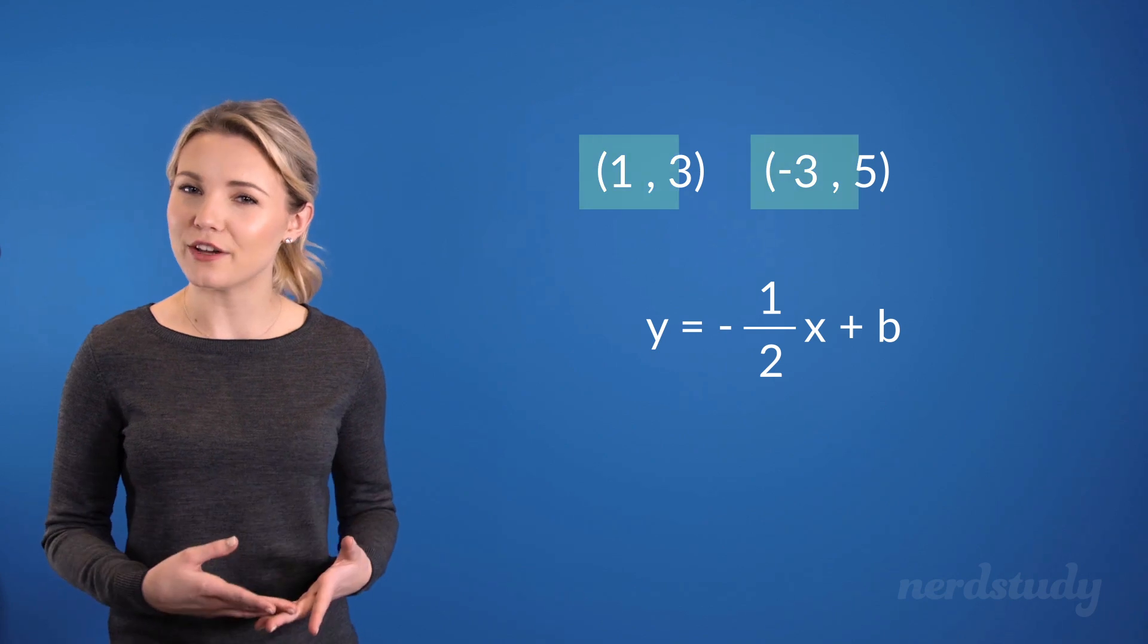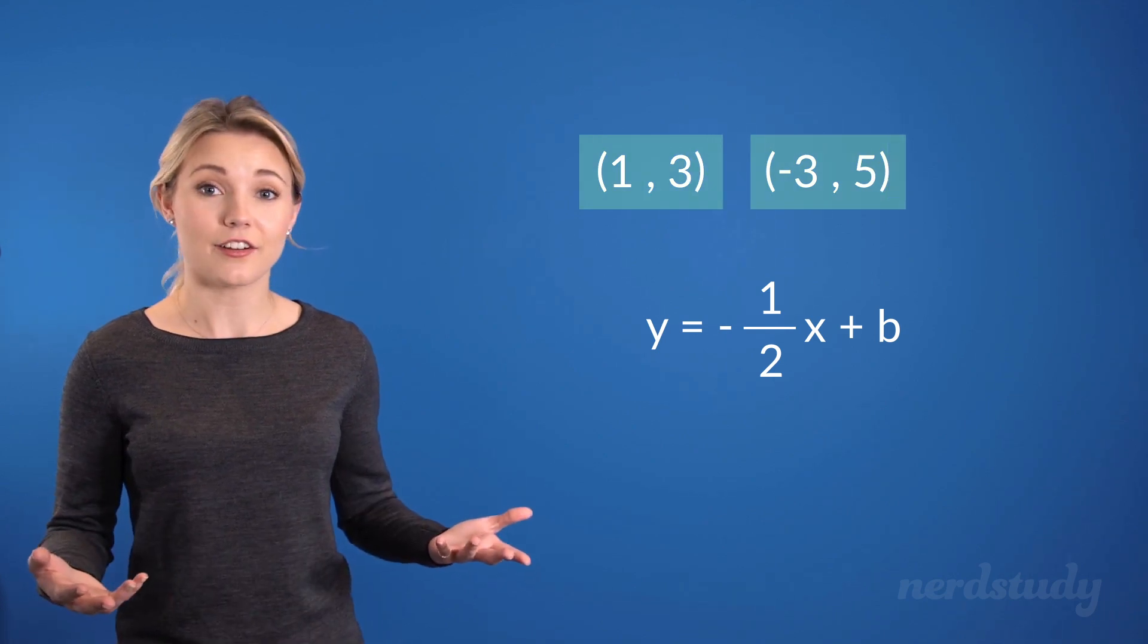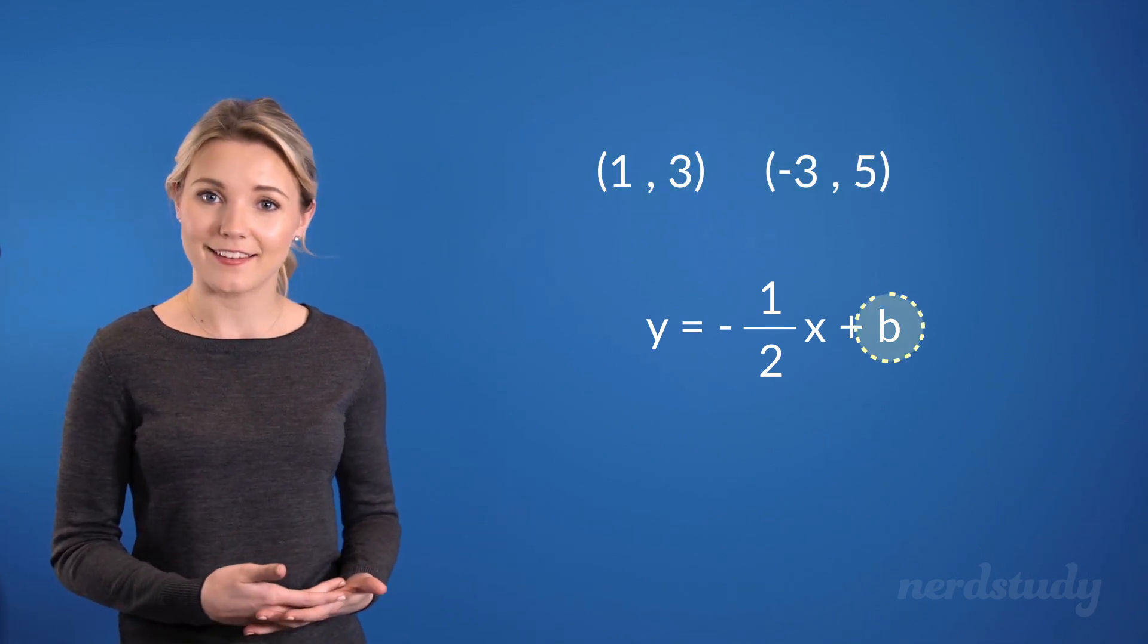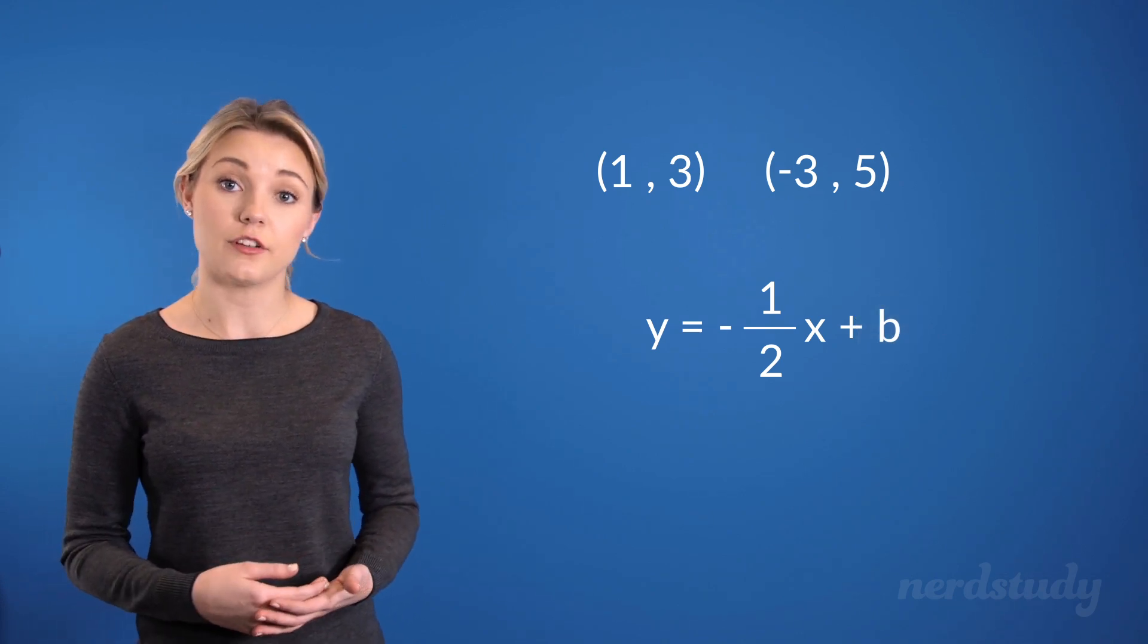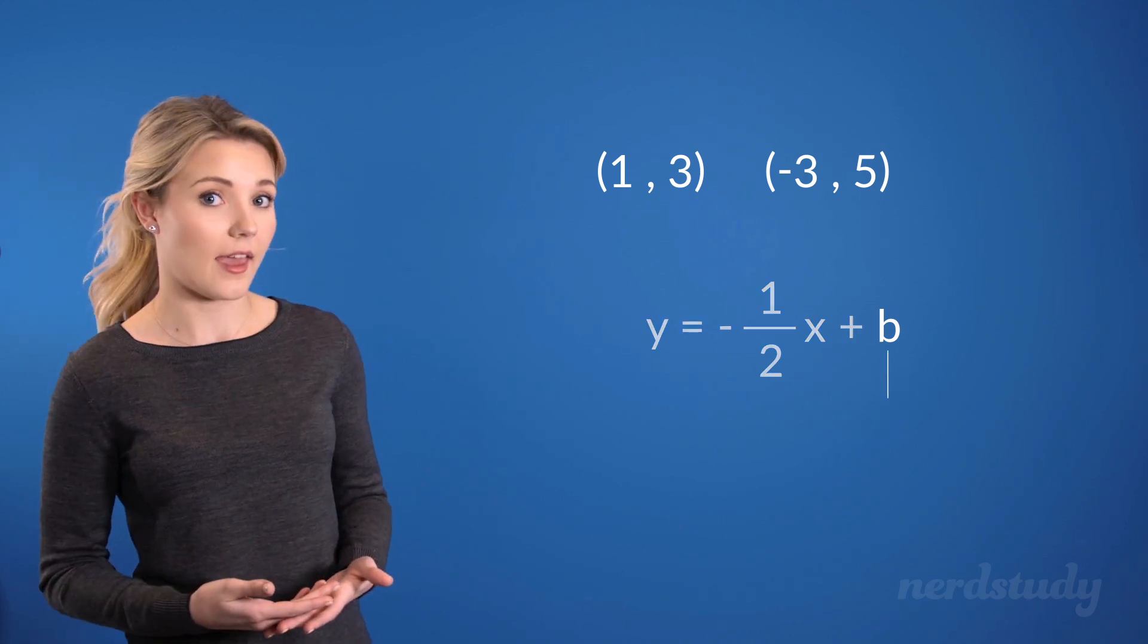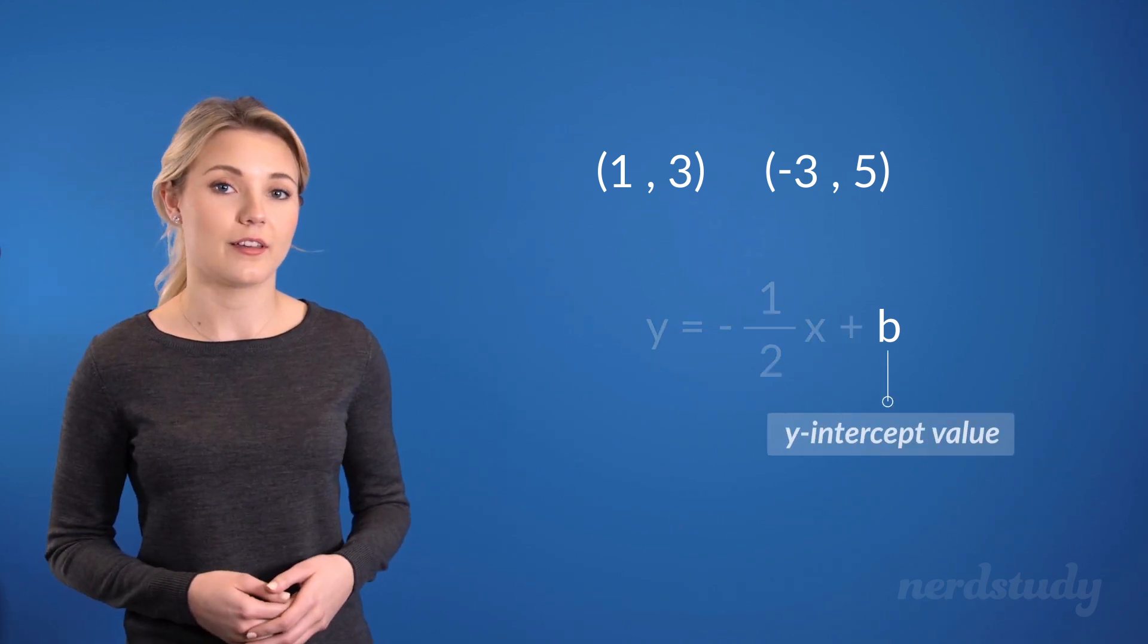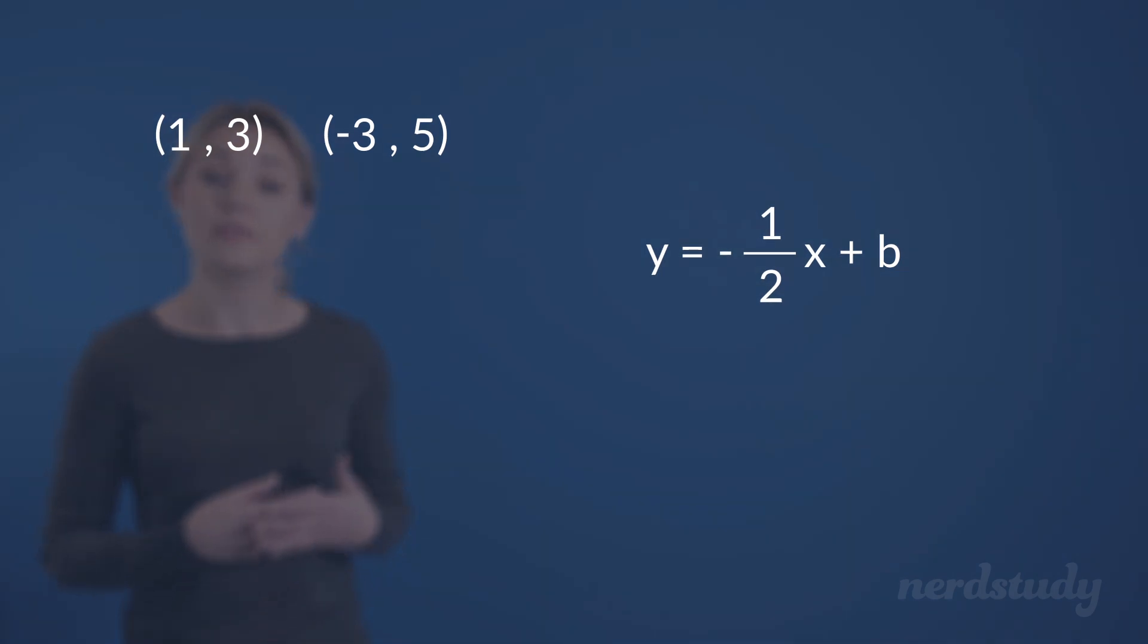Since we have two different points, why not use either of them to find the value of b? Since these are two points of the same line, either of them should yield the same b value, a.k.a. y-intercept value. So, we'll just go ahead and use this one.